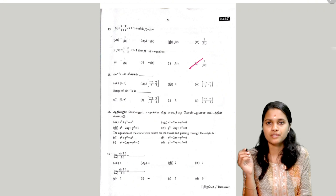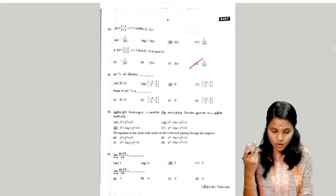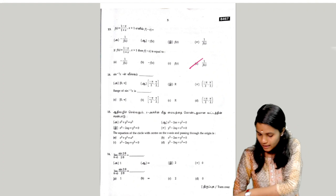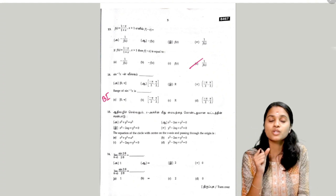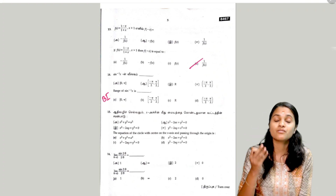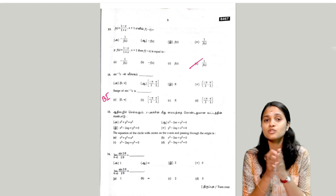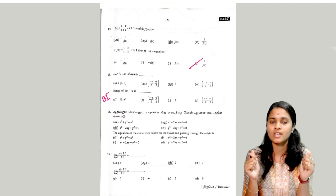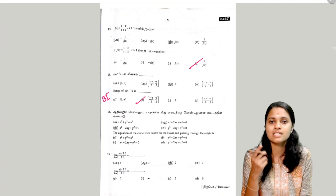Option D: 1 by f(x). The next question is the range of sine inverse of x. This is a booking question — you have the range of sine inverse, cos inverse, sec inverse, cosec inverse. All of these things come in the 4th chapter. We have the table here, and the correct answer is option B.